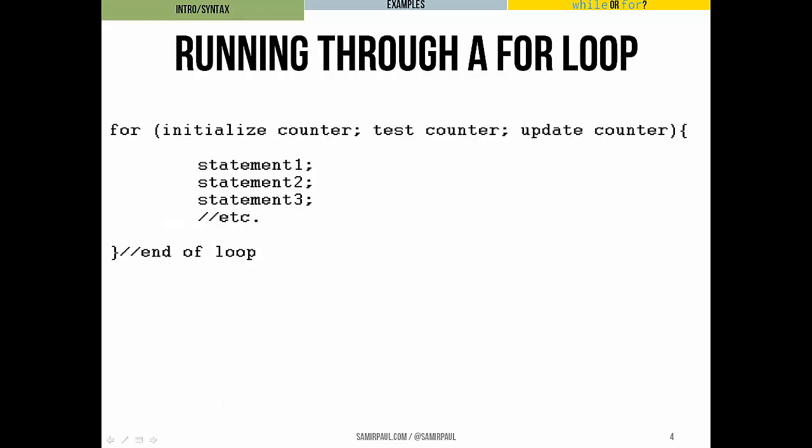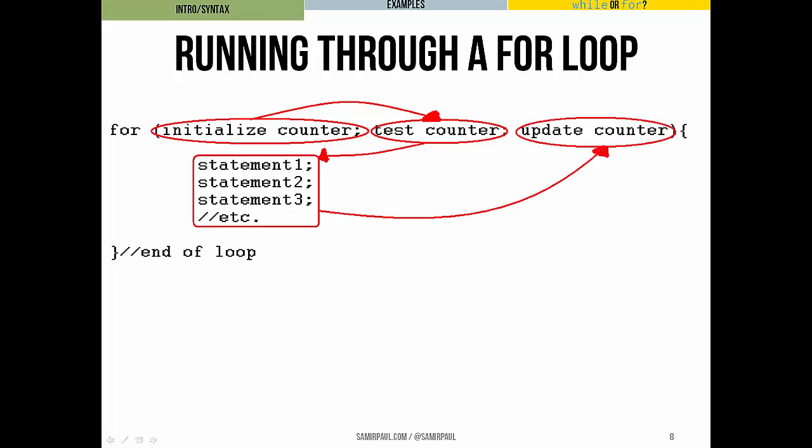Let me go through that one more time. We start by initializing whatever counter we're going to use to keep track of where we are in this count-control loop. We test that counter to see whether we should enter the loop. If that condition is true, we enter and do whatever's inside. Then we update our counter to whatever the new value should be. Typically, we're going to be adding one or subtracting one to it. We go back and test our counter again with the new value. If it's still true, we enter, do the statements, update the counter again, test the counter again, and so on. That's really the action of the loop.